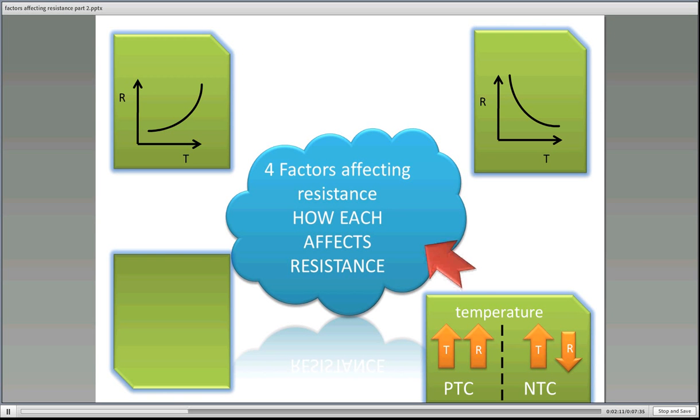Okay, so with temperature, if the temperature goes up, the resistance goes up, we say it has a PTC characteristic and that means positive temperature coefficient. If it has an NTC characteristic where as the temperature goes up, resistance goes down, it's a negative temperature coefficient.